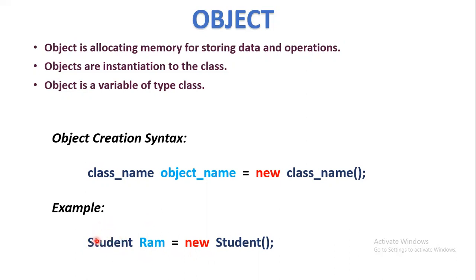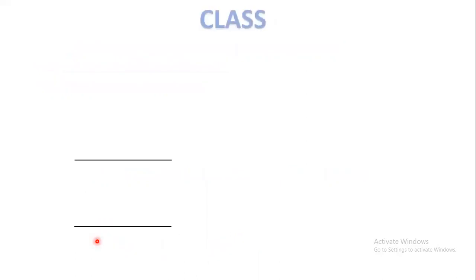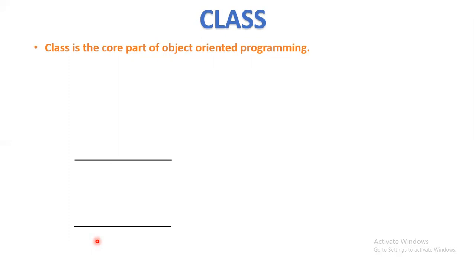The next OOP principle is class. Class is the core part of object-oriented programming because without a class we cannot create an object. To create an object we need a class, that's why class is the core part of OOP. Class is a user-defined data type. Since an object is a variable of type class, and that data type is defined by the user, class is called a user-defined data type.